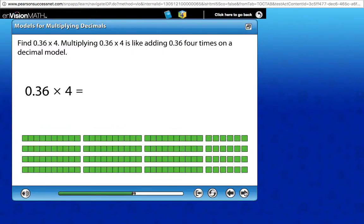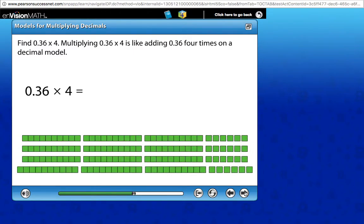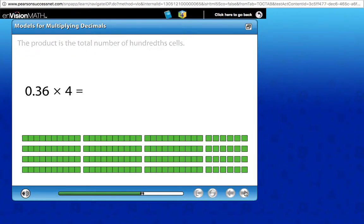Find 0.36 times 4. Multiplying 0.36 times 4 is like adding 0.36 four times on a decimal model. The product is the total number of hundredths cells.